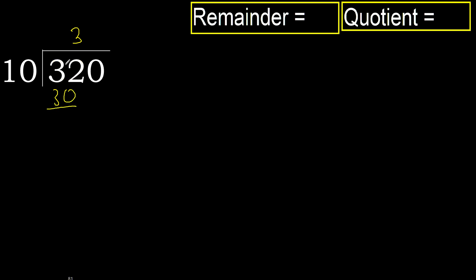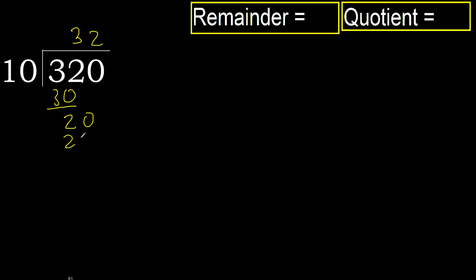Subtract: 32 minus 30 is 2. Next: 20. 10 multiplied by 2 is 20 — 20 is not greater. Subtract: 20 minus 20 is 0.